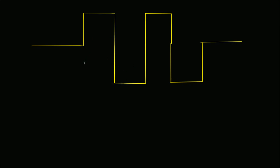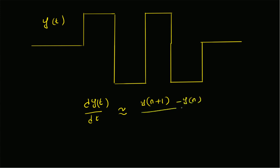Now let us look at a square wave — we can clearly see there are several discontinuities. Applying the discrete approximation, y(n+1) minus y(n) divided by delta_t, does not give a valid approximation here, because at discontinuities the difference is very large while delta_t is very small, making the ratio extremely large and not a meaningful approximation.